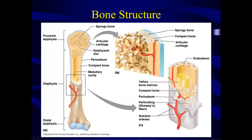Now we're going to look at the structure of bones. We're going to use long bones as our model because you can see a lot of the different structures associated with bones and extrapolate to other bone types. A long bone has a long thin shaft and two widened ends on either end of that shaft. The shaft is called the diaphysis, and the ends of bones are the epiphyses — specifically the proximal epiphysis, closer to the core of the body, and the distal epiphysis, further out on the limb.